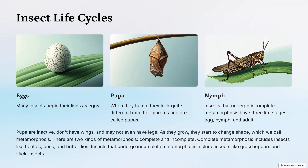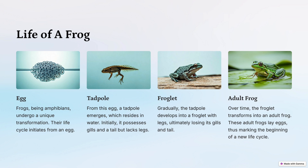Many insects begin their lives as eggs, and when they hatch they look quite different from their parents. Insects that undergo incomplete metamorphosis have three life stages: egg, nymph, and adult. Pupas are inactive, don't have wings, and may not have legs. As they grow they start to change shape — this is called metamorphosis. There are two kinds: complete and incomplete. Complete metamorphosis includes beetles, bees, and butterflies; incomplete metamorphosis includes grasshoppers and stick insects.